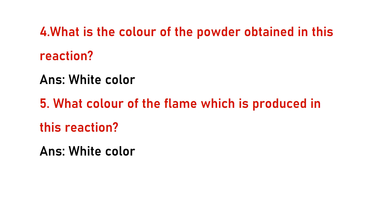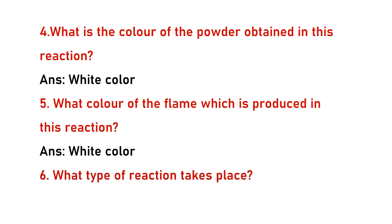As the end product, both the light and the powder are white in color. Sixth question: what type of reaction takes place? Combination reaction takes place, because magnesium combines with oxygen to form one end product.